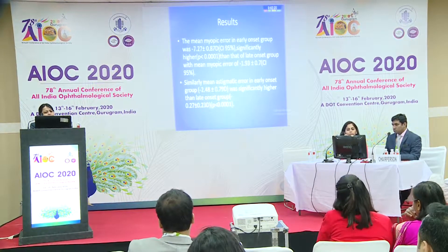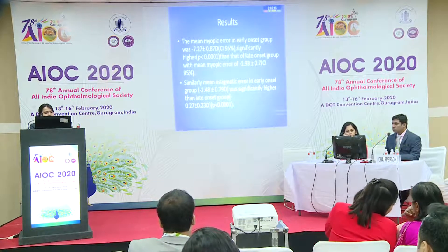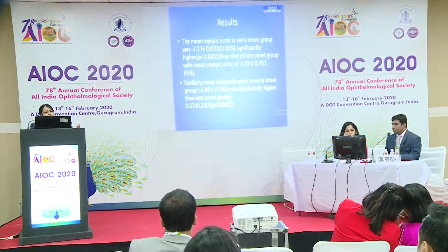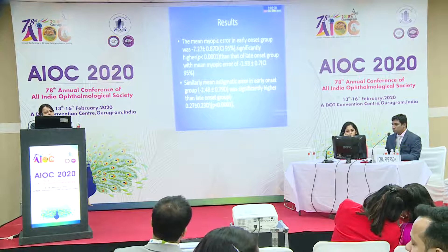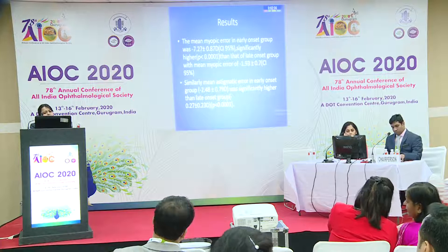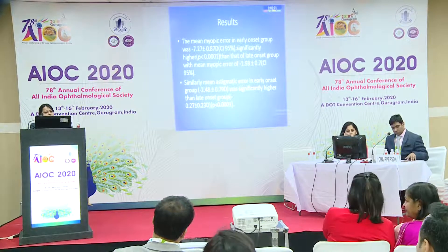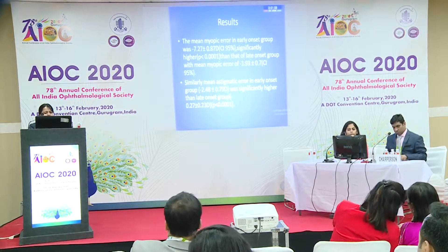The mean myopic error in the early onset group was minus 7.27 with a 95% confidence interval, compared to the late onset group which had a mean myopic error of minus 1.93. Similarly, the mean astigmatic error in the early onset group was minus 2.48, which was significantly higher than the late onset group which had only a negligible 0.27.